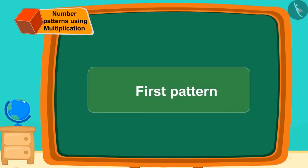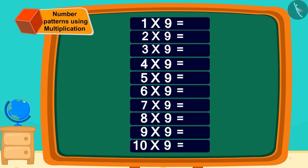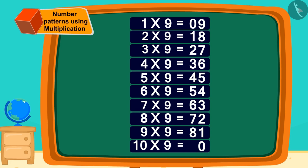Let us see two unique patterns to memorize the table of nine easily. To make a multiplication table of nine, first write the numbers in decreasing order from nine to zero in this way. Now, write a number like this from zero to nine next to these numbers. Isn't that easy?